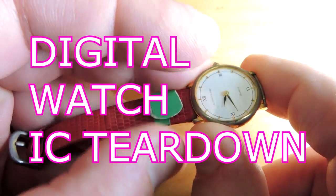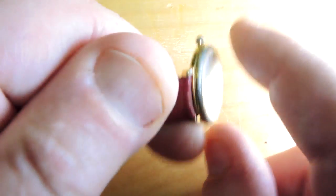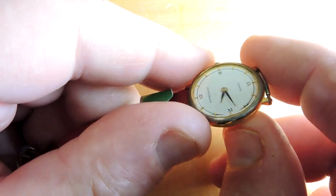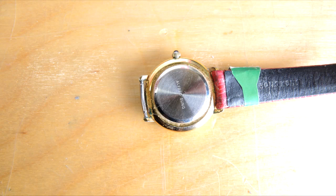Teardown time. This is an old digital watch. It has an analog face, so there's going to be a stepper motor inside which drives the actual gearing mechanism. Let's take it apart, find the integrated circuit inside of it, and take a look at the silicon die and the circuitry it contains.